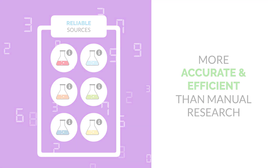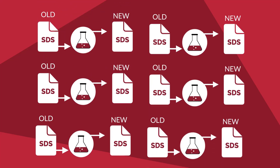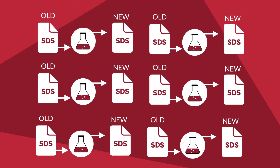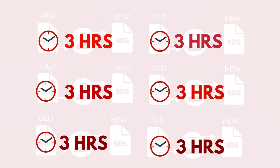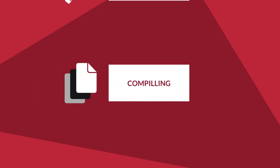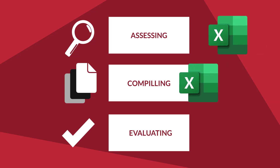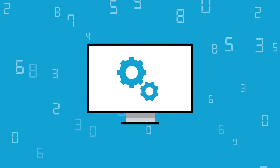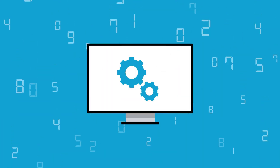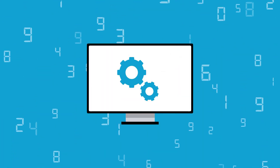This provides you with consolidated data from reliable sources in a manner that is much more accurate and efficient than manual research. For instance, altering an SDS to reflect updated hazard classes for each chemical would take around 3 hours. Instead of manually compiling, assessing, and evaluating the chemical data for all 16 sections of your SDS in an Excel sheet, ERA's software automates all the necessary calculations for you.